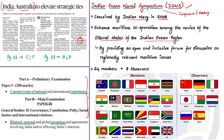These countries are called littoral states — those countries located near the coast or which are part of a particular water body. In this case, it is the Indian Ocean. The main aim is to increase maritime cooperation among the navies of the littoral states. This symposium provides an open and inclusive forum for discussion on maritime issues in the Indian Ocean region, so that all member and observer countries will have a common understanding about maritime issues.